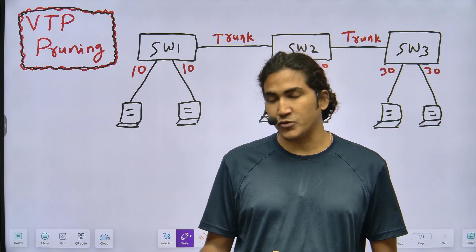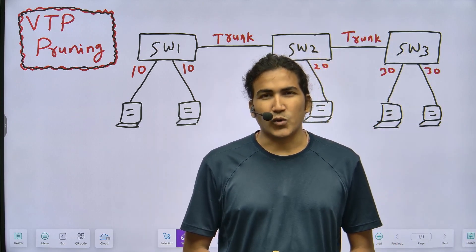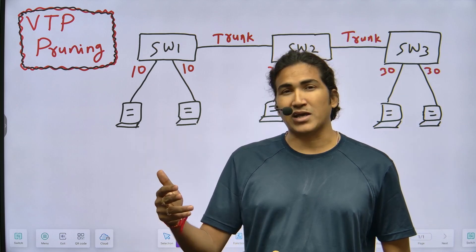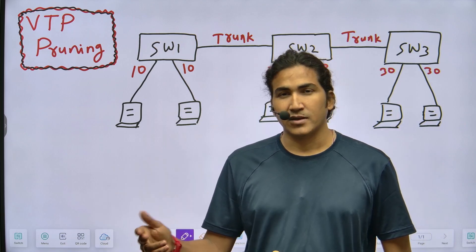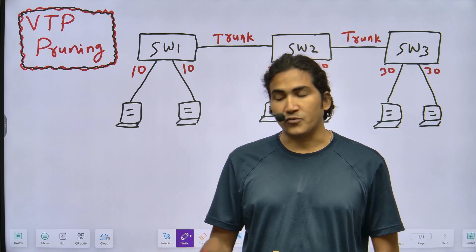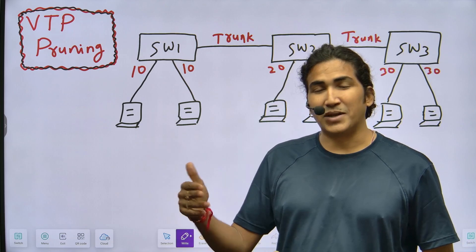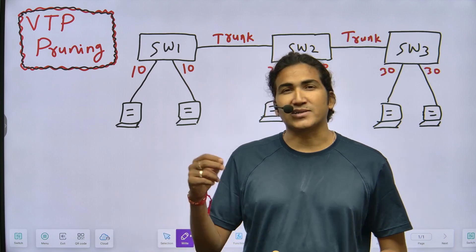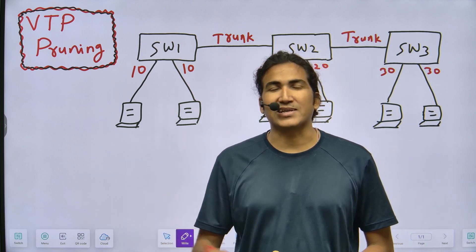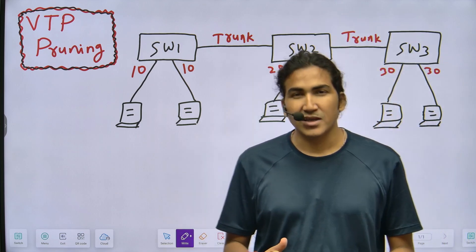If there is any issue in the network related to VTP pruning, how you can identify it and fix it. So without wasting time, let's start. First of all, what is VTP pruning? The exact meaning of pruning is to stop unwanted broadcast or multicast message - stop unwanted traffic from going to a place where it is not needed. VTP pruning reduces the bandwidth consumption.